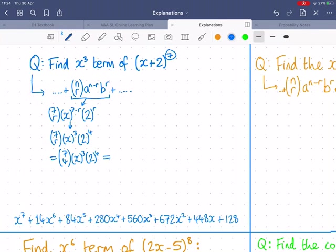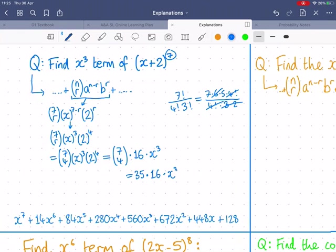So 7 choose 4 times 2 to the power of 4 is 16 times x cubed. So we could do our 7 choose 4 calculation. You'd probably use a calculator for this, but let's just have a look quickly. Do some cancellation. And 6 is the same as 3 times 2. So we have 35.